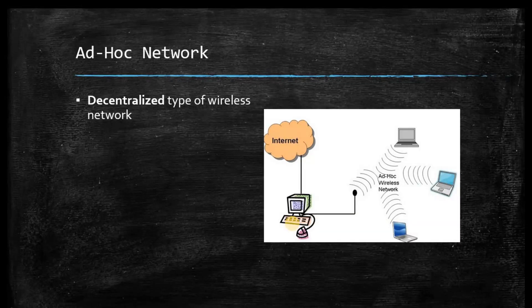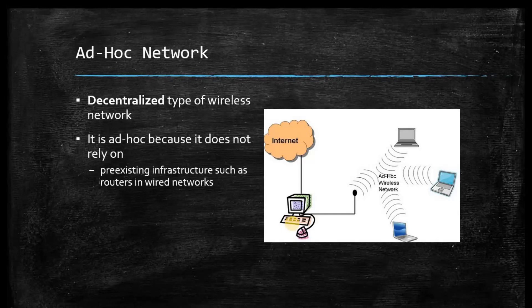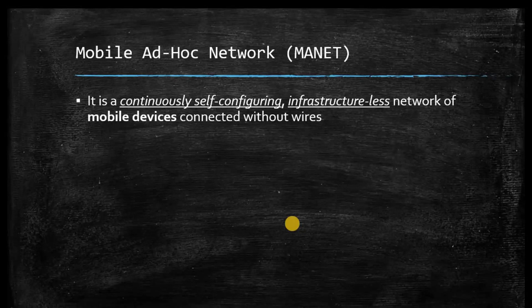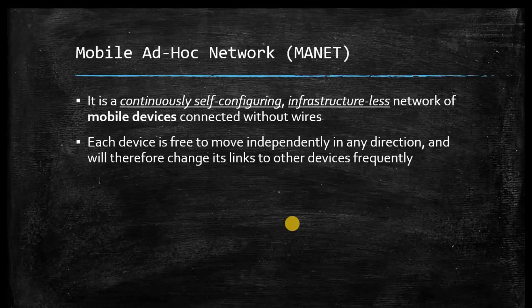The ad-hoc network is a decentralized type of wireless network. It is ad-hoc because it does not rely on pre-existing infrastructure such as routes in wired networks or access points in wireless networks. It is a self-configuring network. The mobile ad-hoc network is also called MANET, and the infrastructure-less network is referred to as MANET or mobile ad-hoc network.